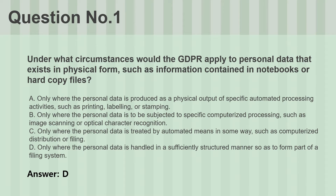Question number one. Under what circumstances would the GDPR apply to personal data that exists in physical form, such as information contained in notebooks or hard copy files? A. Only where the personal data is produced as a physical output of specific automated processing activities, such as printing, labeling, or stamping. B. Only where the personal data is to be subjected to specific computerized processing, such as image scanning or optical character recognition. C. Only where the personal data is treated by automated means in some way, such as computerized distribution or filing. D. Only where the personal data is handled in a sufficiently structured manner so as to form part of a filing system. Answer: D.